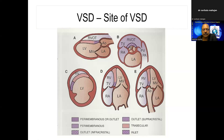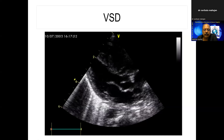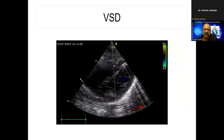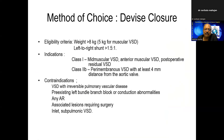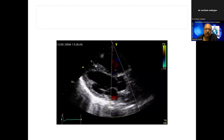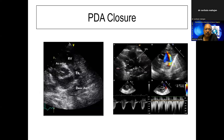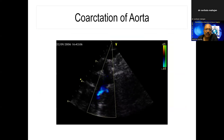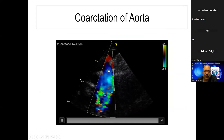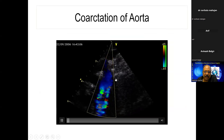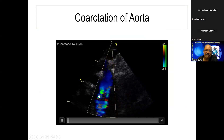Dr. Ravibala Mahajan asks about coarctation of aorta. Coarctation is present in the descending aorta, distal to the left subclavian artery. In the suprasternal window showing ascending aorta, arch, and descending aorta, you switch on colors. In normal circumstances, you see uniform blue color. Turbulence suggests coarctation. Then, similar to aortic stenosis, we keep a pulsed wave sample volume just before the coarctation to get a pre-coarctation gradient, then switch to continuous wave Doppler across the coarct. The gradient before is 4 mmHg; across is 36 mmHg; effective gradient is 32 mmHg. Any gradient more than 20 mmHg is considered significant for coarctation.